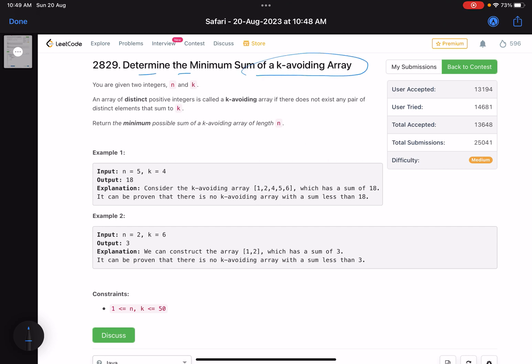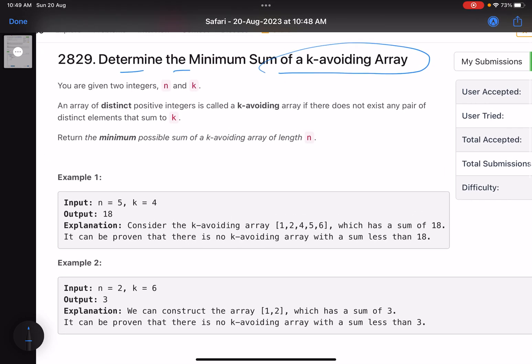You are given two integers n and k. An array of distinct positive integers is called k-avoiding if there does not exist any pair of distinct elements that sum to k. Return the minimum possible sum of a k-avoiding array of length n.